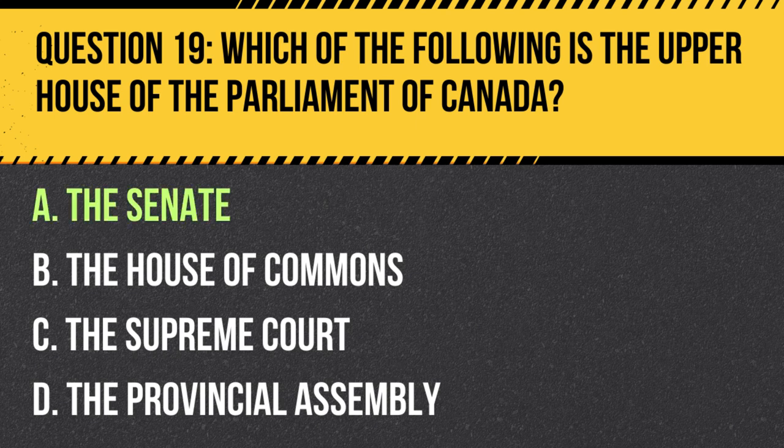Answer: A. The Senate. The Senate is the upper house in Canada's bicameral parliamentary system, consisting of appointed senators who review and revise legislation passed by the House of Commons.